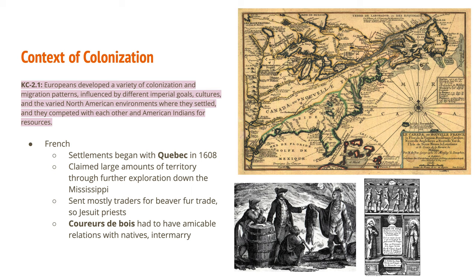The French settled in Quebec in 1608 — their very first permanent settlement. They claimed some of the largest amounts of territory in the New World, rivaling Spain. They came through the St. Lawrence Seaway into the Great Lakes, then reached the Mississippi and made their way all the way down it. The economic activity they were mostly there for was the beaver fur trade.